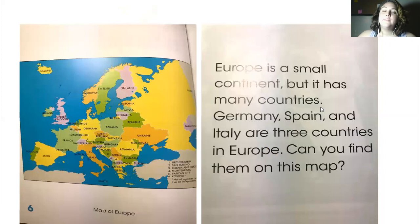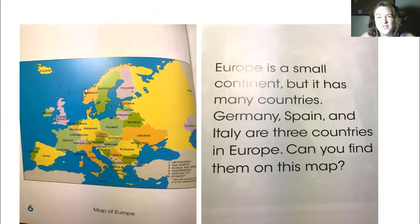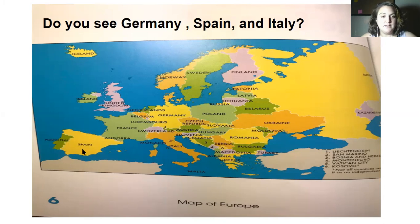Europe is a small continent but it has many countries. Germany, Spain, and Italy are three countries in Europe. Can you find them on this map? I made it bigger for us so we can look. Do you see Germany? Spain is over here, and we're looking for Italy.